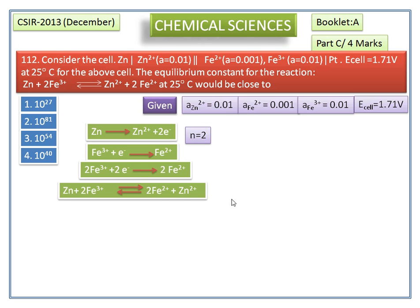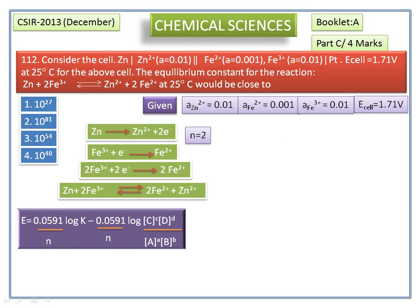The relationship between the equilibrium constant and the E°cell value is E equals 0.0591 divided by n log K minus 0.0591 divided by n log concentration of product divided by concentration of reactant.